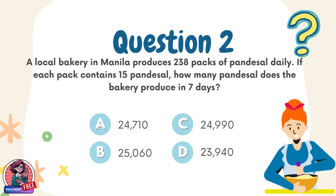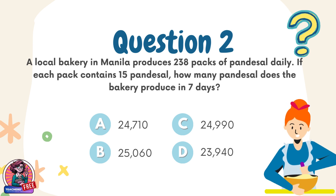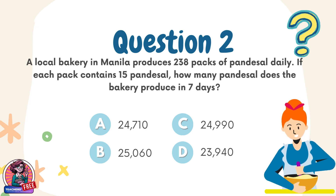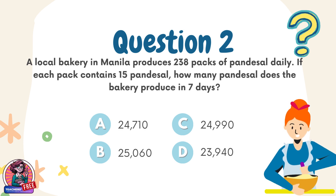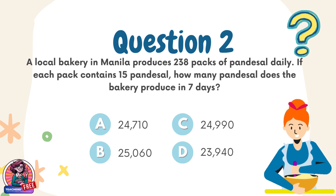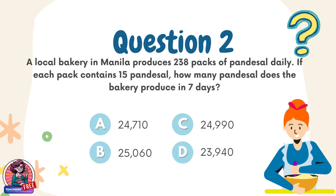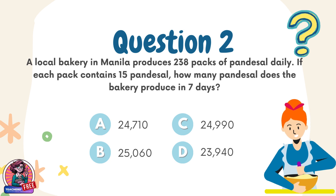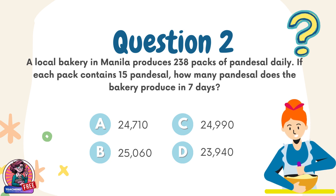Question 2. A local bakery in Manila produces 238 packs of pandecil daily. If each pack contains 15 pandecil, how many pandecil does the bakery produce in 7 days? Choices: A. 24,710, B. 25,060, C. 24,990, D. 23,940.